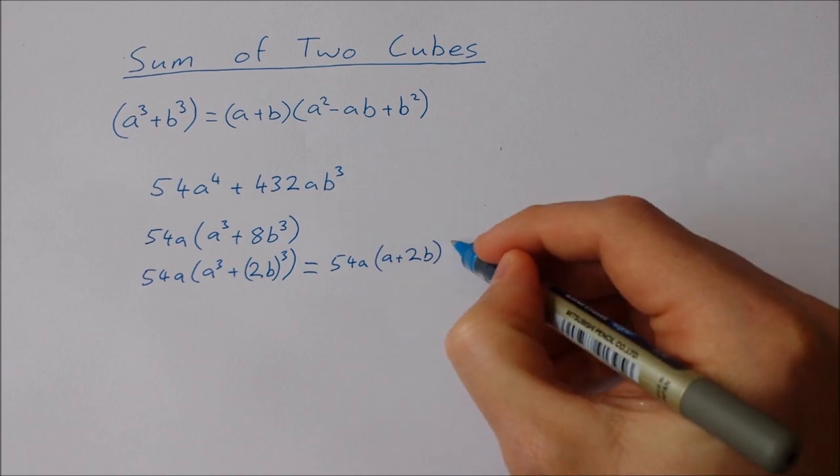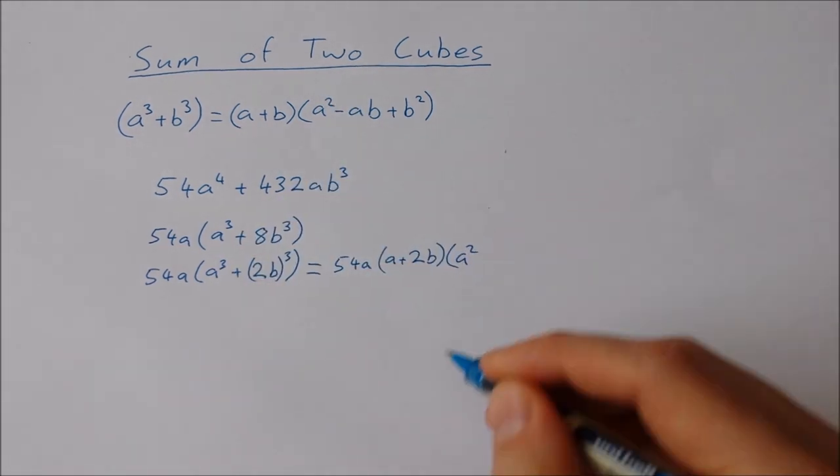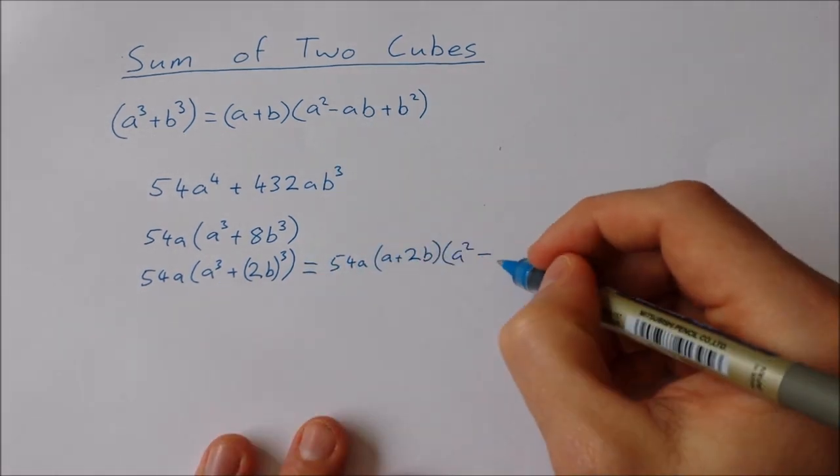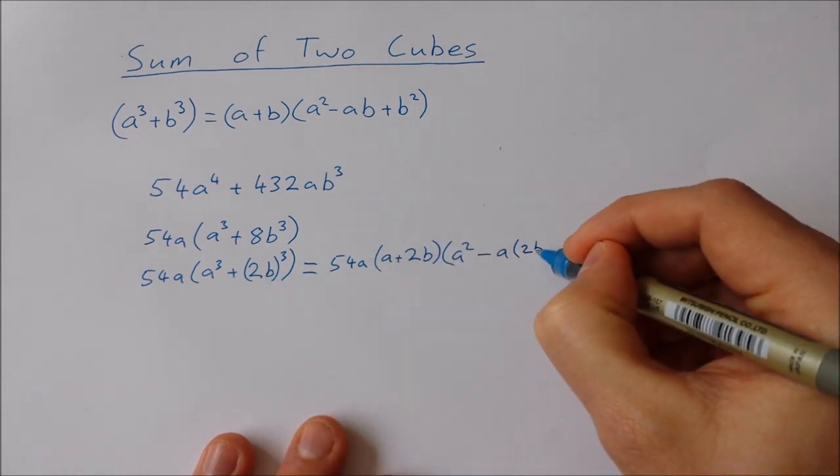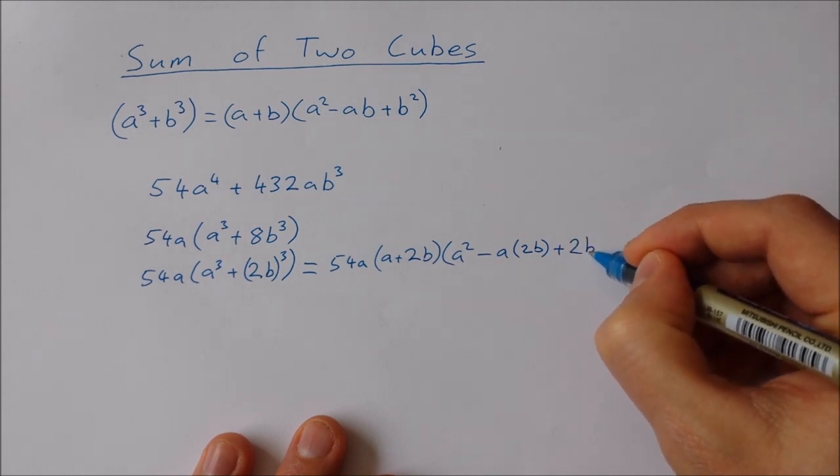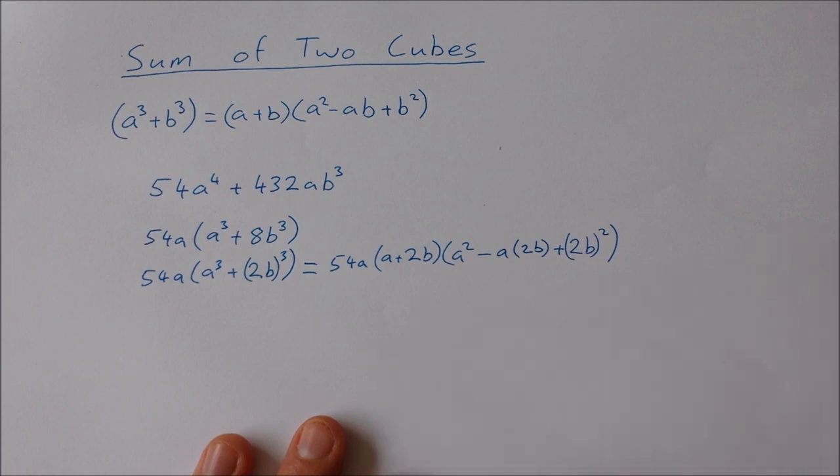Then in the next set of brackets I'm going to have the first squared, so that's a² minus the first times the second, so minus a times 2b, and then plus the second squared, so plus 2b².